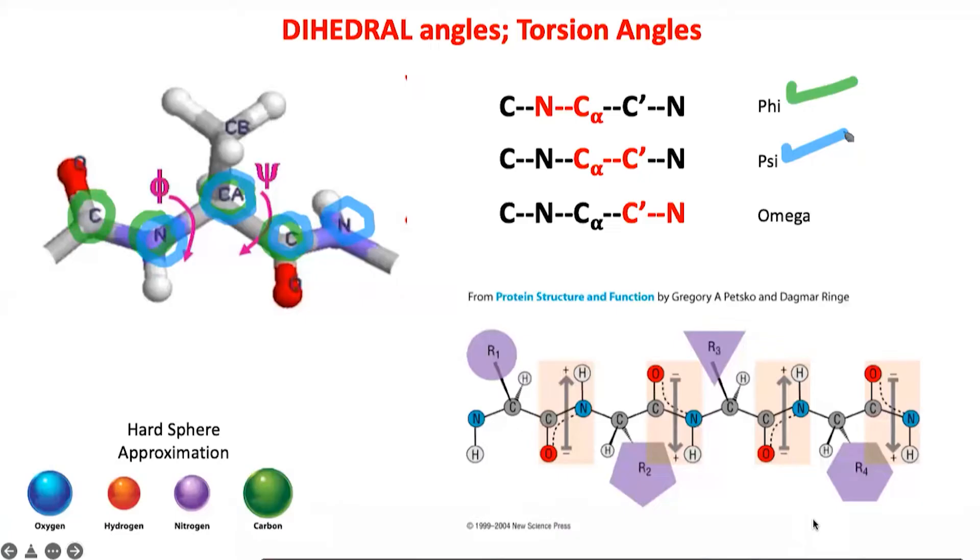And the third angle is the omega angle, and I'll change color here again. This is omega, and omega is basically this angle: N-C alpha-C prime-N-C alpha. So these four atoms define the omega angle.